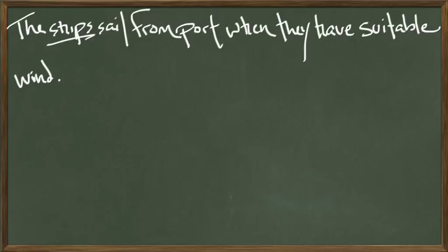So, ships, subject of the sentence, nominative case, what are the ships doing? They're sailing, verb, they're sailing from, preposition from where, port, object of the preposition. And then we have this, let's switch colors. Then we have this whole different phrase down here. They sail from port when they have suitable wind.